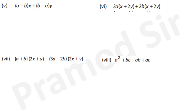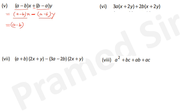Question 5: here (a−b) and (b−a) are given. Write (b−a) as −(a−b). Take minus sign common: you get (a−b)(x−y). Now (a−p) is matching so take (a−p) as common; (x−y) is left. That is your answer.